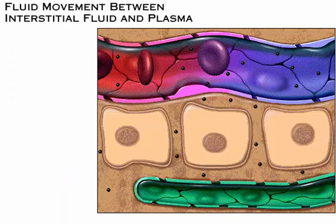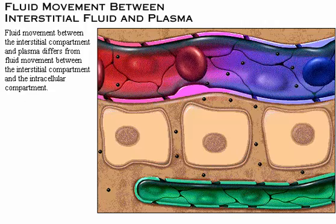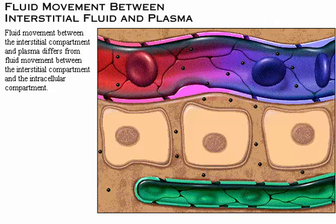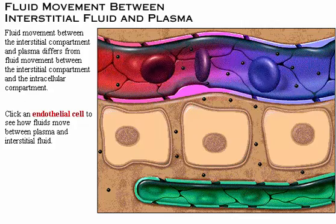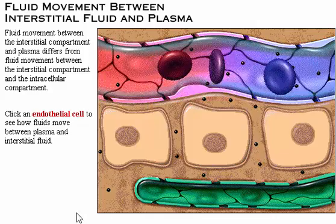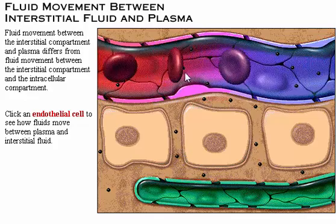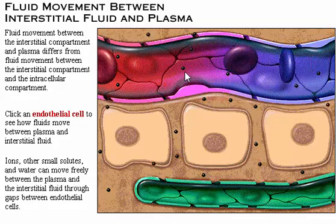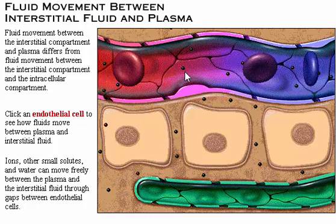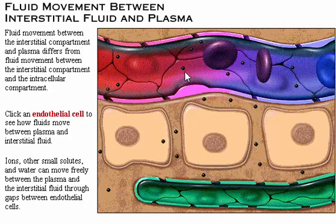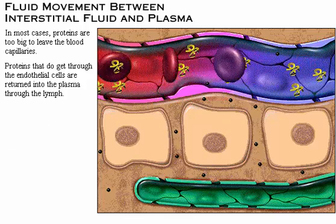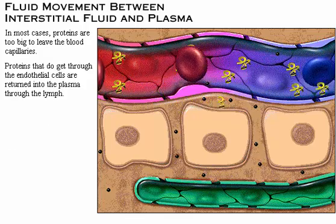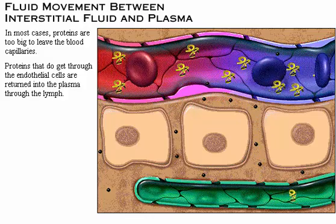We've seen how water moves between the intracellular and interstitial fluid compartments. Fluid movement between the interstitial compartment and plasma is quite different from the movement between the interstitial compartment and intracellular compartment. Click an endothelial cell to see how fluids move between plasma and interstitial fluid. Ions, other small solutes, and water can move freely between the plasma and the interstitial fluid through gaps between endothelial cells. In most cases, proteins are too big to leave the capillaries. Proteins that do escape from the blood capillaries are removed by the lymph capillaries and are moved back into the plasma by way of the lymph.